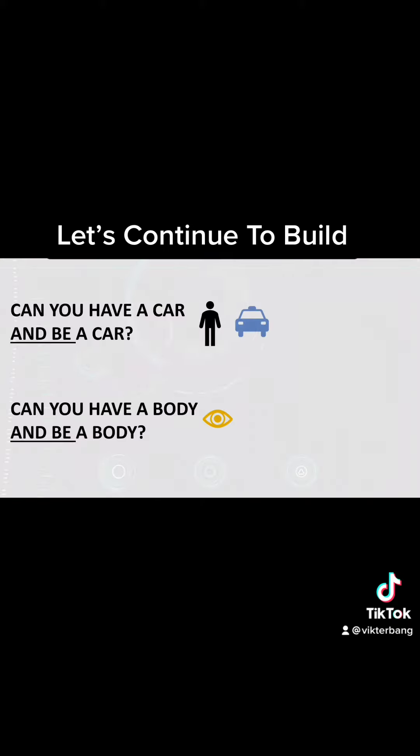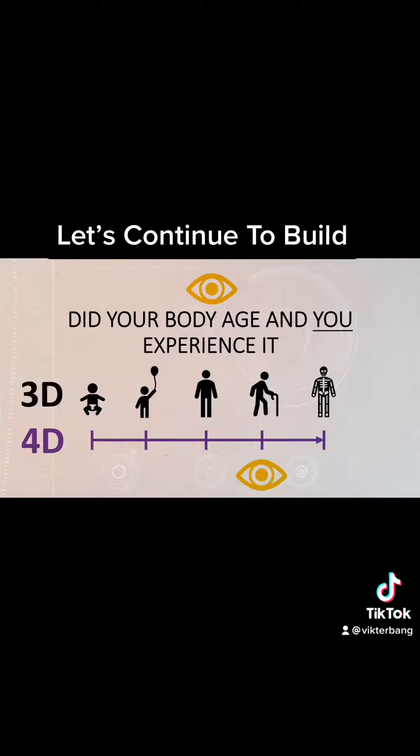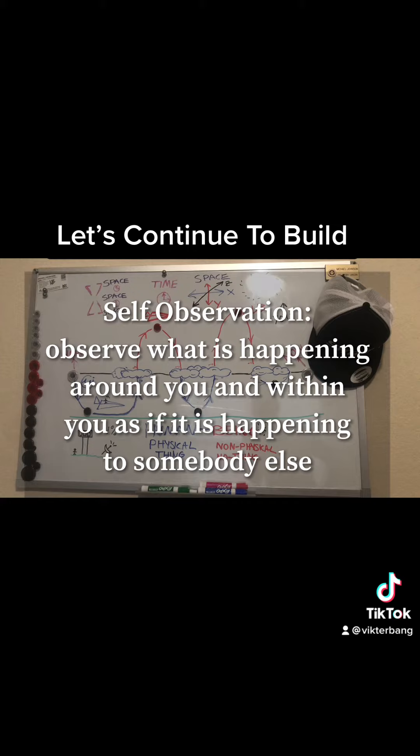What's the proof? Can you have a body and be a body? No. You can ask yourself: did your consciousness age, or did it experience your body age throughout your life? These are things you can look at yourself, and self-observation is one way to look at this.